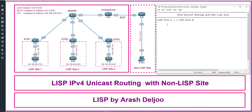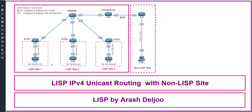As I mentioned before, with LISP we can also communicate between the LISP site and non-LISP site. Look at this scenario — we have the RLOC space or routing locator space, EID spaces, and one non-LISP site. The goal of this scenario is communicating between R7, R8, and R9 in the LISP sites with the non-LISP site VPC4, which represents a host on the internet.